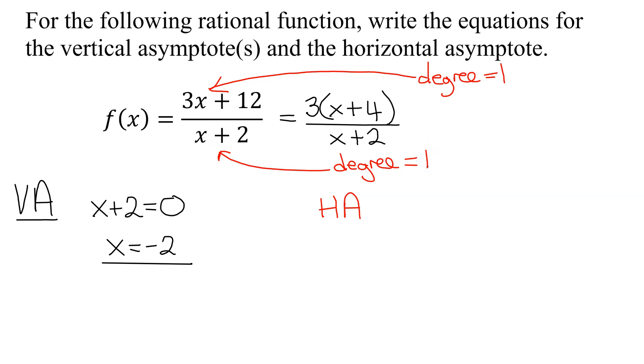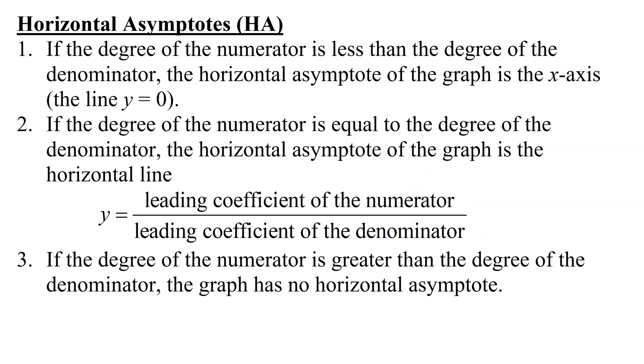So in this case, the degree of the numerator equals the degree of the denominator. In other words, this is often called a balanced equation. And what does that mean? Well, let's look at our notes for horizontal asymptotes.